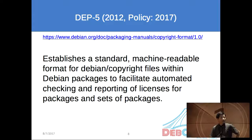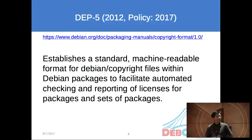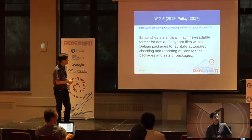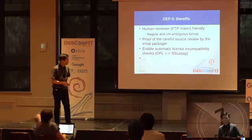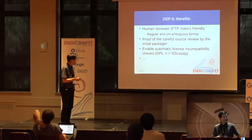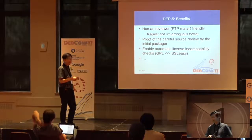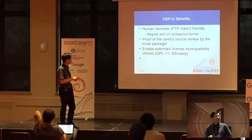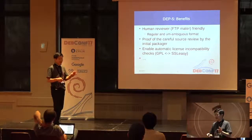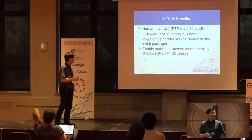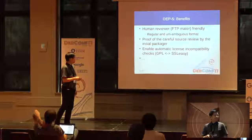Let's talk about DEV5. It's a very interesting format — standard, machine readable. The biggest advantage is actually human reviewer friendly. That was one of the best things that happened. So if you want to read it, you don't need to look for all the files — it's all there, or at least it was supposed to be. And regular and unambiguous format — file names and all those are linked. And that was actually becoming a requirement to get the package accepted.